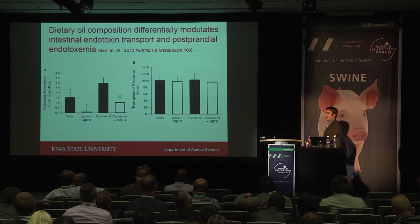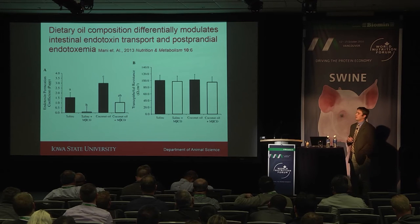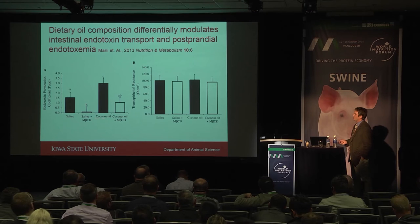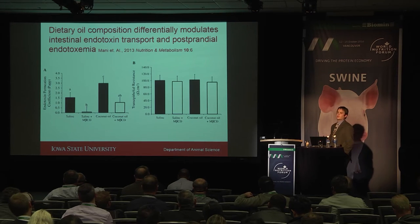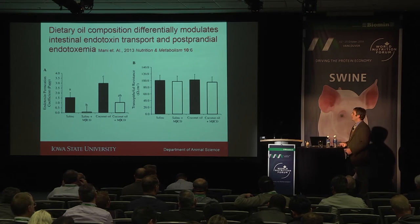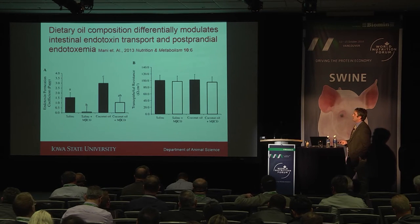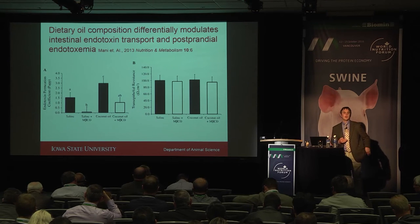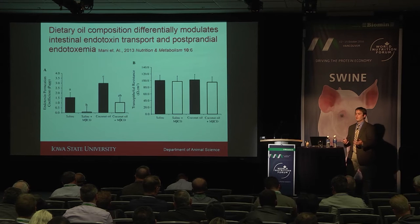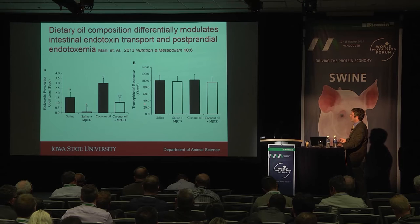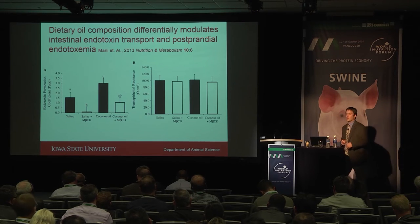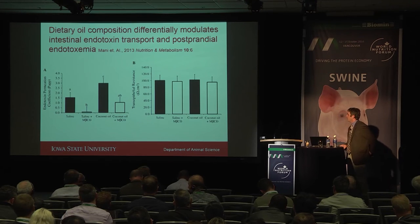To understand what's driving this, since we saw no differences in transepithelial resistance in some studies, we used beta-methyl-cyclodextrin — a lipid raft inhibitor that depletes cholesterol from cell membranes — to antagonize lipid raft-mediated uptake. Pre-treating ileal samples with beta-methyl-cyclodextrin produced a significant reduction in endotoxin permeability in both the saline control and coconut oil group. This suggests transcellular modes of action are contributing to endotoxin uptake. Importantly, modifying the cholesterol component of the plasma membrane did not alter the overall electrophysiology of the barrier.